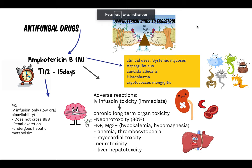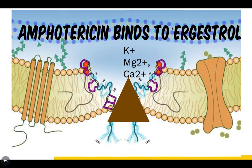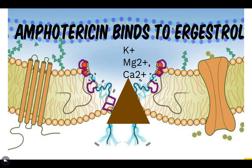Antifungal drugs used to treat systemic mycosis — amphotericin B being one of them. Amphotericin B is a polyene fungicide or antibiotic. The mechanism of action is it binds to ergosterol in the fungal membrane, forming a pore, leading to loss of potassium and other small molecules, leading to cell death.